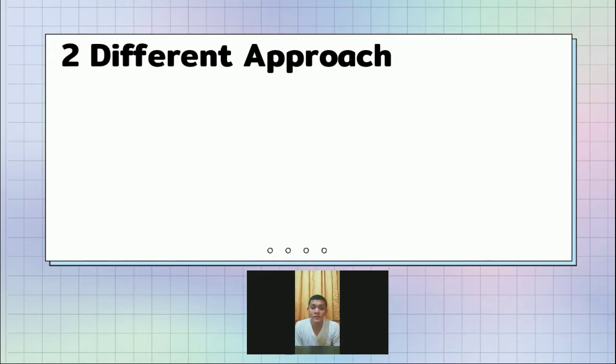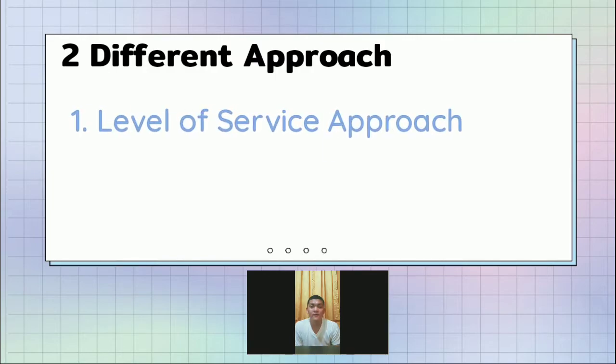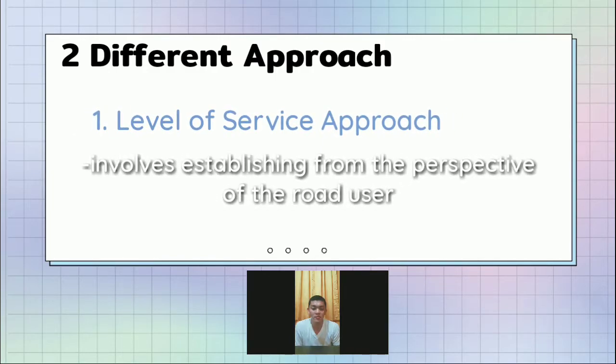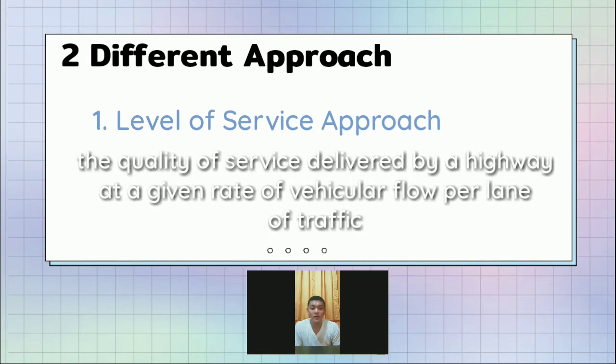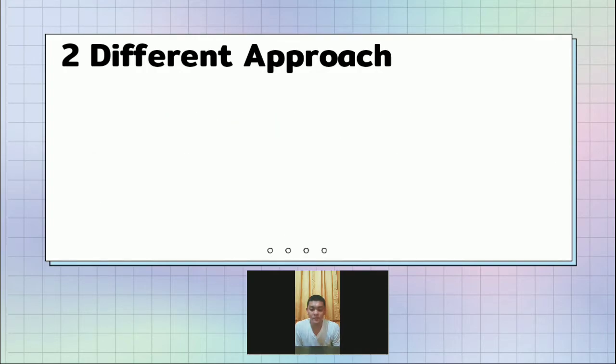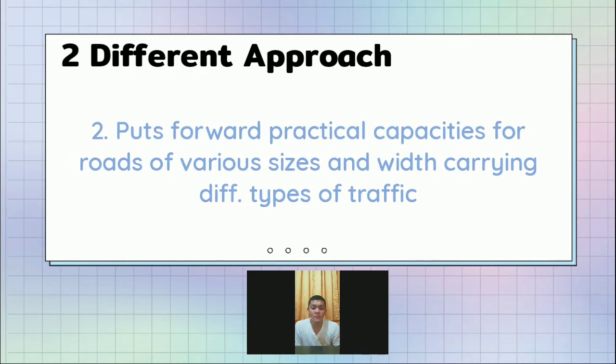There are two different approaches to determine the capacity of a highway. The first, which I will be discussing later, is the level of service approach. It involves establishing from the perspective of the road user the quality of service delivered by a highway at a given rate of particular flow per lane of traffic. The second approach puts forward practical capacities for roads of various sizes and with carrying different levels.